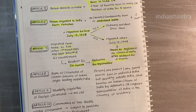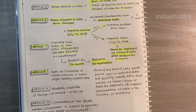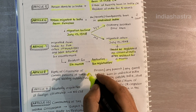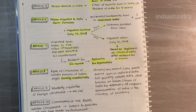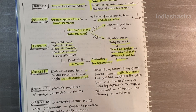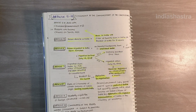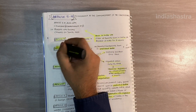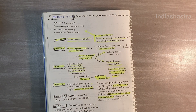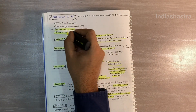Article 8 deals with the rights of citizenship of a person of Indian origin residing outside India. A person born in India, or any of whose parents or grandparents were born in undivided India, and who is residing outside India, became a citizen through a diplomatic channel. In short, Articles 5, 6, 7, and 8 all talked about persons who became citizens on 26th January 1950.